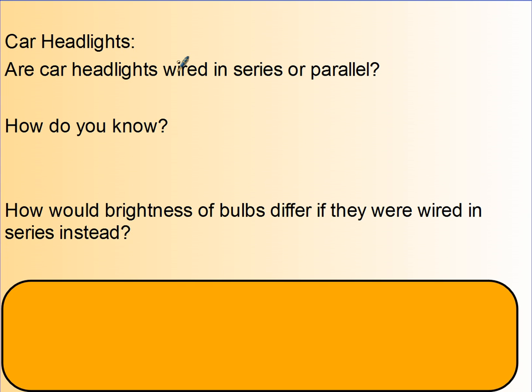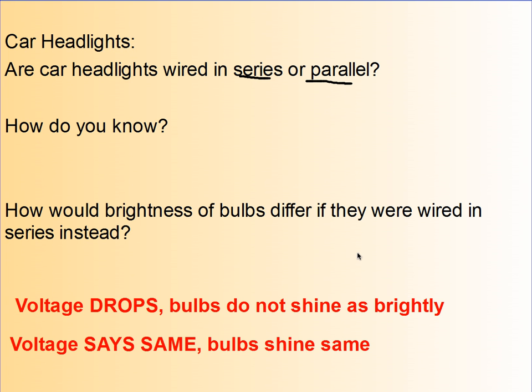Let's first look at car headlights. Do you think your car headlights are wired in series or parallel, and why do you think one or the other? Think about this: have you ever had a light bulb, have you ever hit something or one of your headlights went out? Did the other bulb change in brightness? Hopefully the answer is no. If they were wired in series and one went out, they would both go out. So when one goes out, the other headlight stays on, so they have to be in parallel.